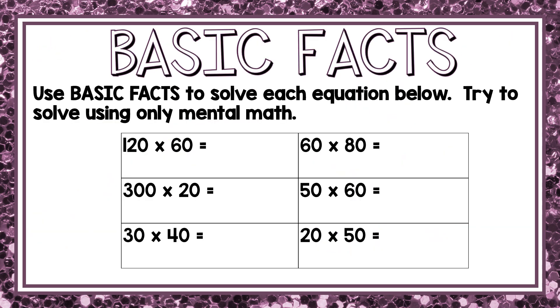So let's use basic facts to solve each equation below. Try to solve using only mental math. Let's look at the first example, 120 times 60. I'm going to use my basic fact, which is 12 and 6. I know that 12 times 6 is 72.